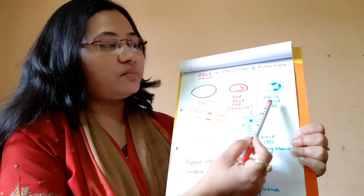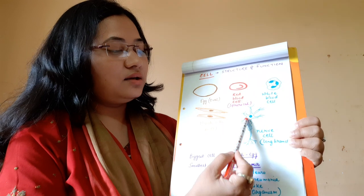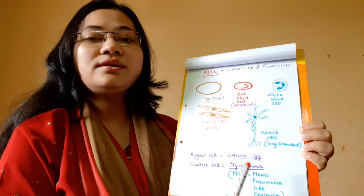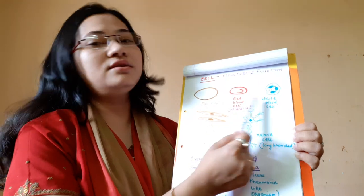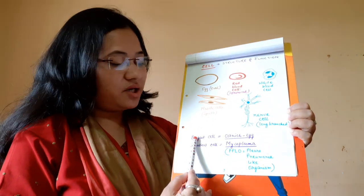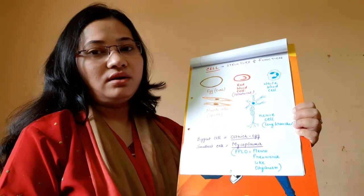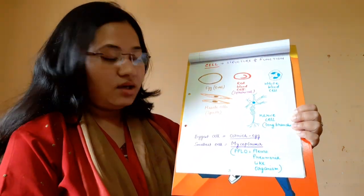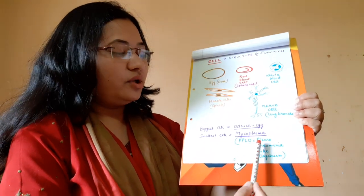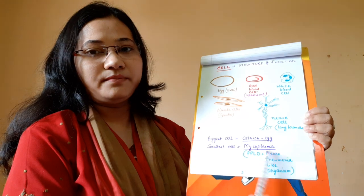Different cells have different shapes according to the function they perform. The RBCs are spherical, white blood cells have an irregular structure, muscle cells are spindle-shaped, and nerve cells are long and branched. The biggest cell is the ostrich egg, and the smallest cell is the Mycoplasma bacteria — also called PPLO, or Pleuro Pneumonia-Like Organism.